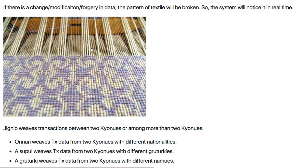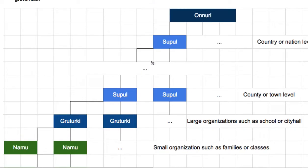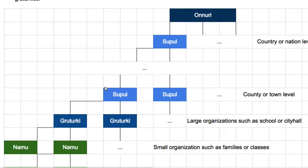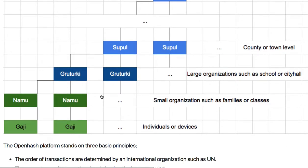Those transaction data will be viewed by Grootgi, NAMU, Supul, or Onnuri. They create a pattern. If there is some data modification in gaji, it shall be noticed by NAMU. And if there is data modification in NAMU, that fact shall be notified by Grootgi. So even the most minor thing — because all data in the world shall be viewed by each other — there can't be any modification in data history or hash, because they are all hashed together.